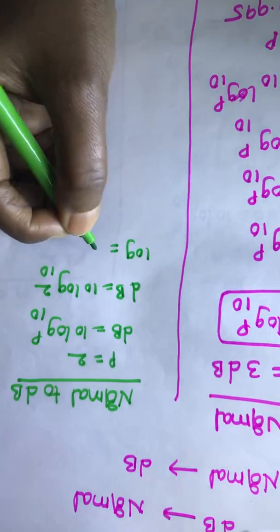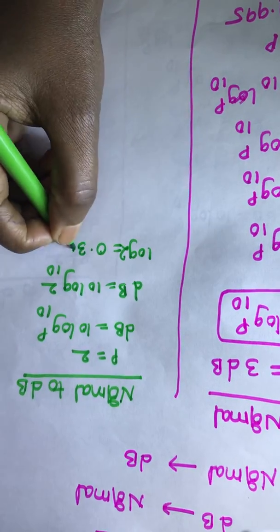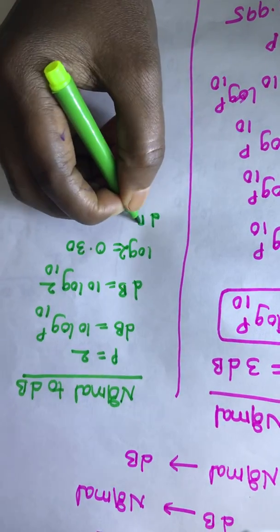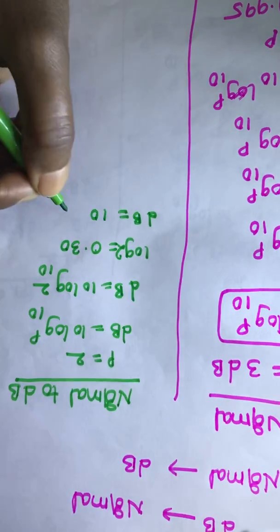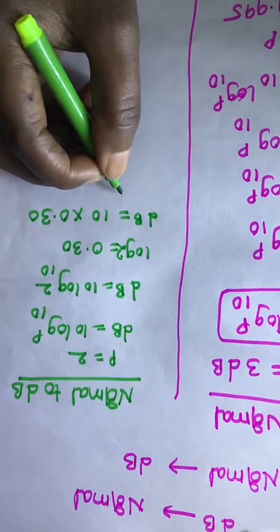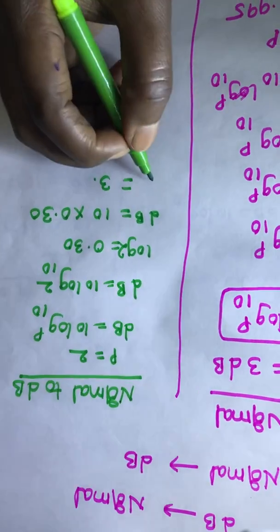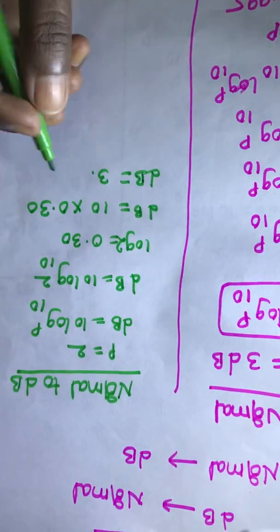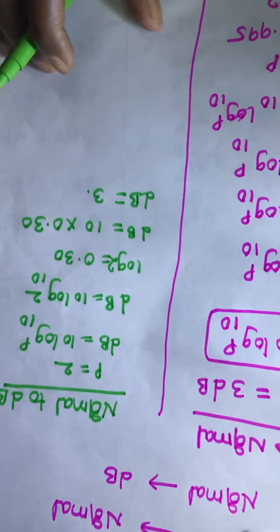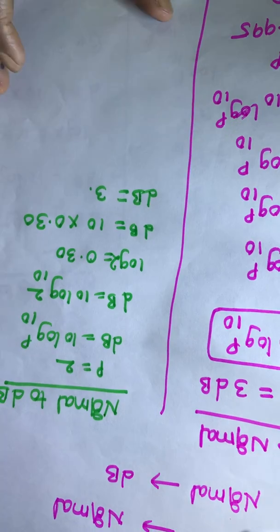We will submit it, 10 into 0.30 which is equal to 3. The same thing we got here. This is for only if they gave while calculating power gain.